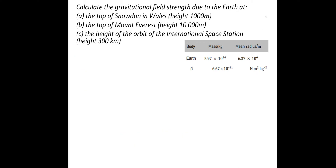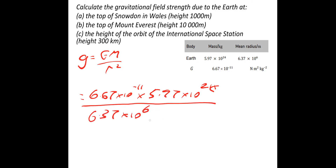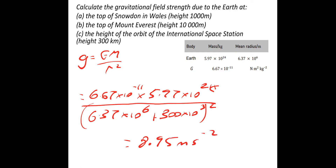And one more: g equals GM over r squared. So 6.67×10⁻¹¹ multiplied by 5.97×10²⁴, divided by 6.37×10⁶ plus 300 kilometres (300×10³) — make sure you square that quantity. That gives a gravitational field strength of 8.95 metres per second squared. You might not realise it, but there's still quite a significant gravitational effect at the International Space Station, which is obviously responsible for keeping it in orbit.